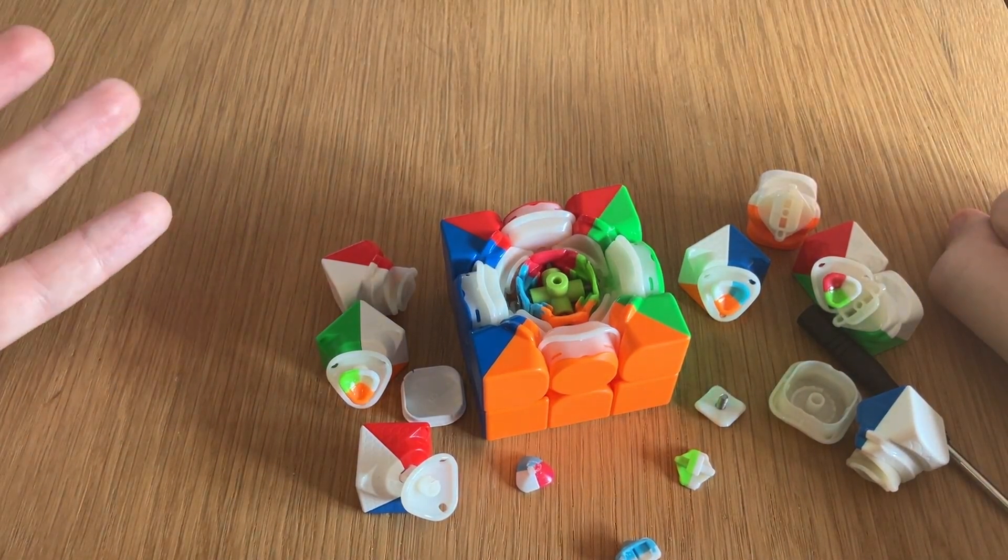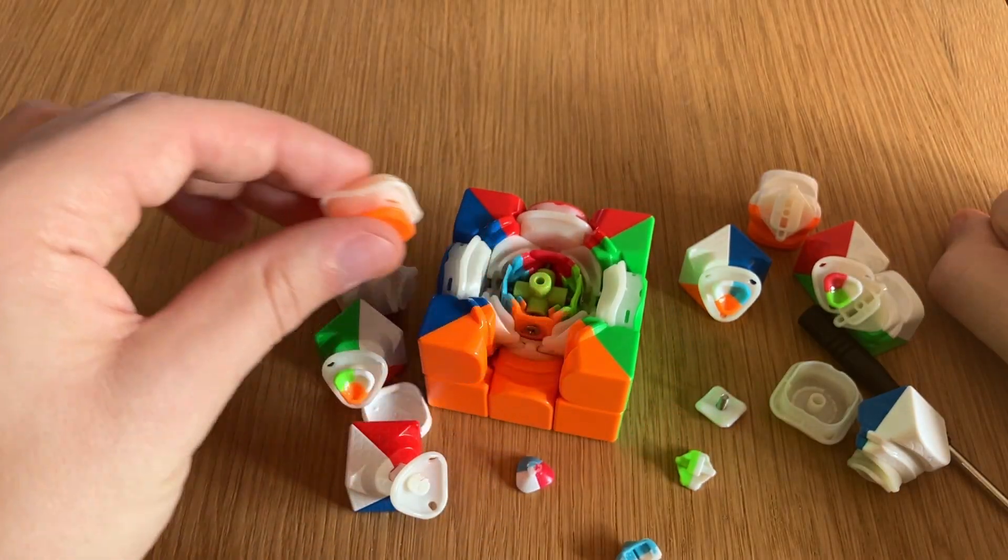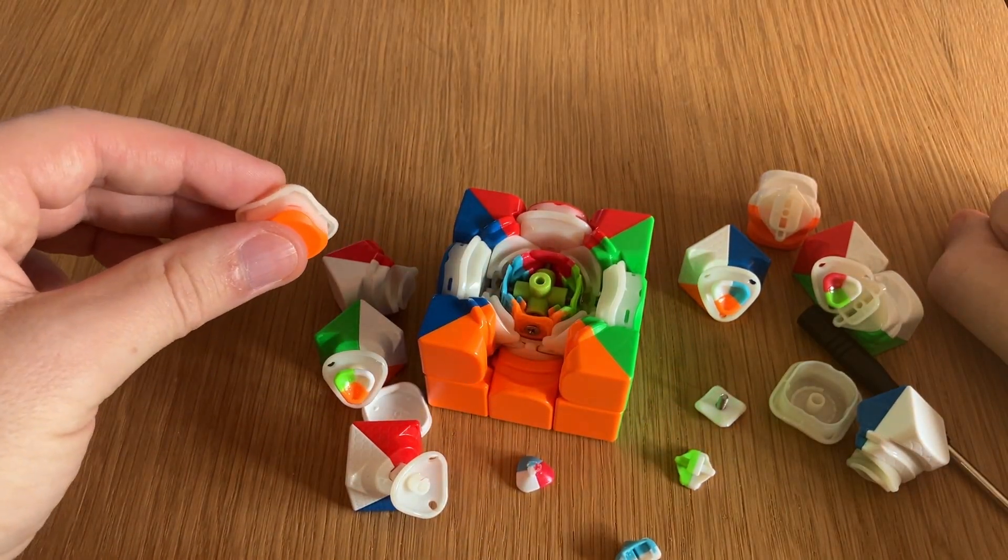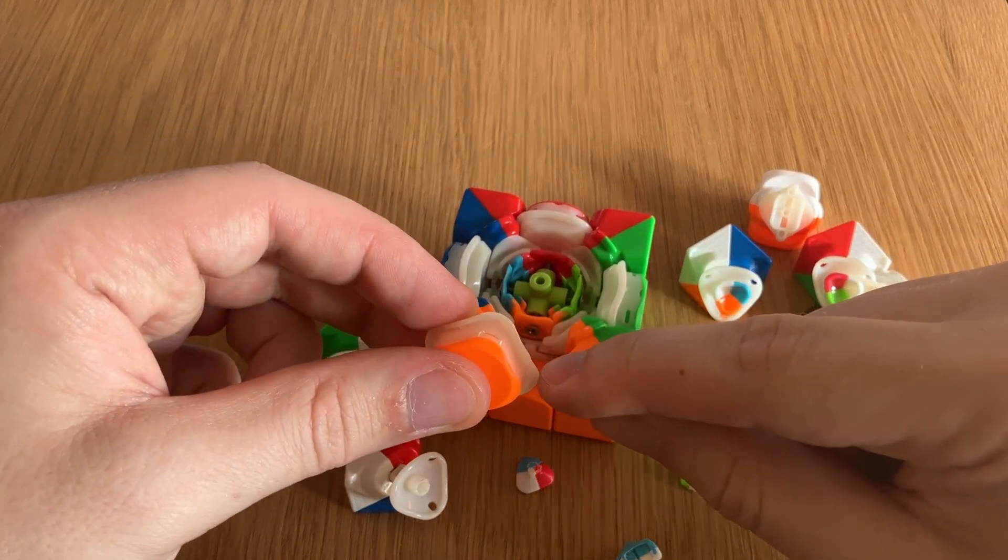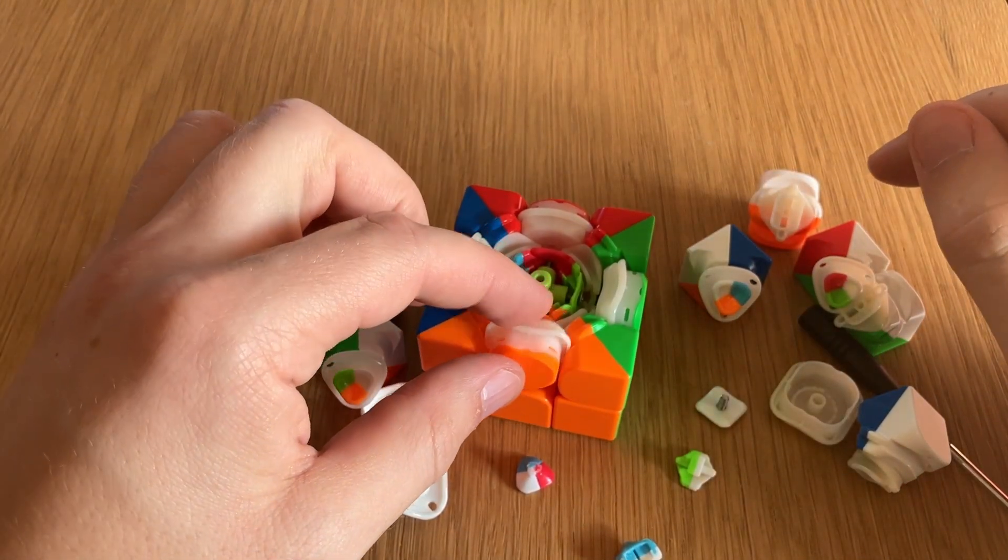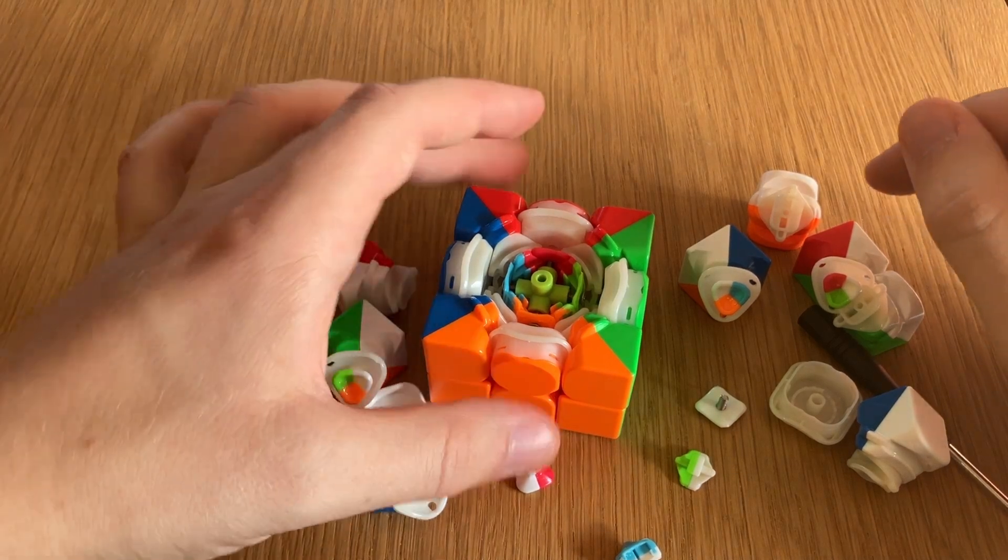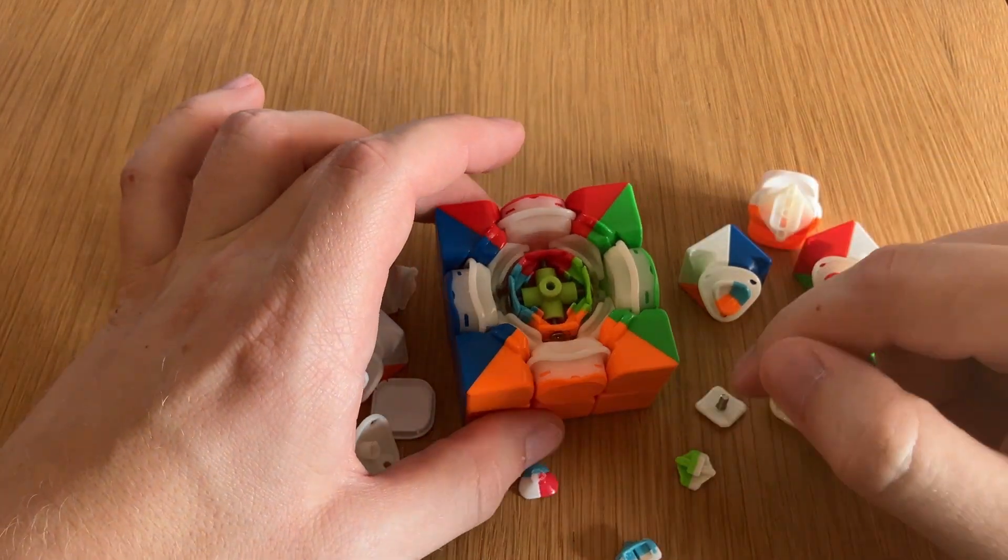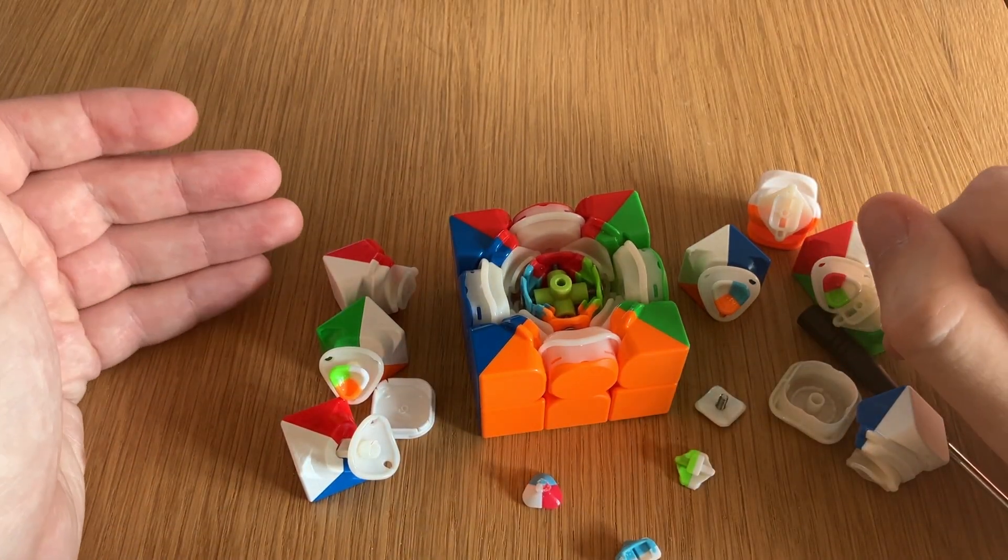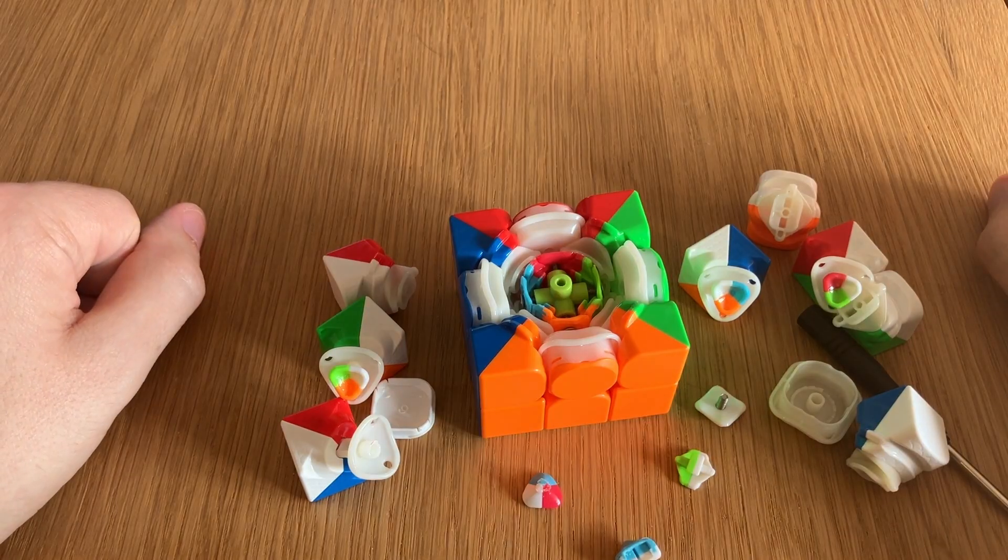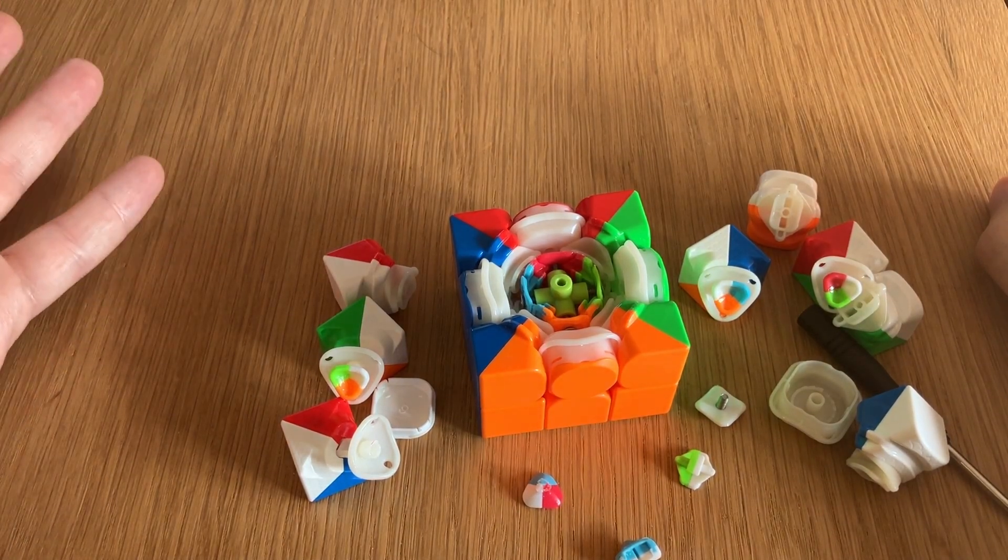It should also be noted here that part of why the V10 was chosen as the outer shell here is because of the slip design that causes the centers to stay inside and not fall out, as well as the relatively roomy inside that allowed me to put this keychain inside.